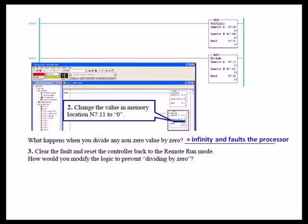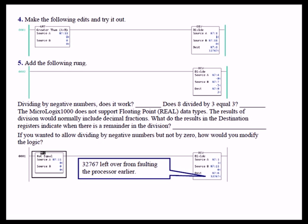Hopefully you gave it some thought before you actually looked at the solution. Again, we integrated a comparison instruction to prevent dividing a non-zero value by zero. So N7:11, if it's not greater than zero, then we're not going to divide.